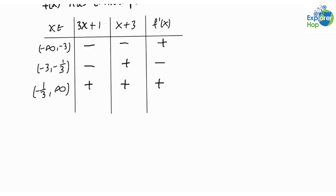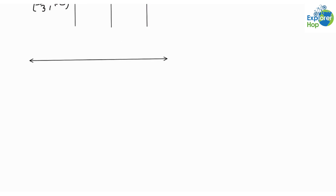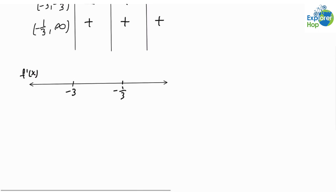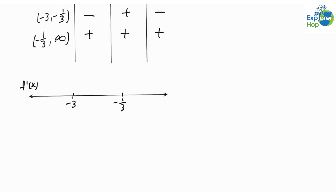We can also represent this information on a number line. Constructing a number line and labeling all of the critical points, the derivative of f of x is positive in the interval from negative infinity to negative 3, negative in the interval from negative 3 to negative 1 over 3, and positive in the last interval from negative 1 over 3 to infinity.